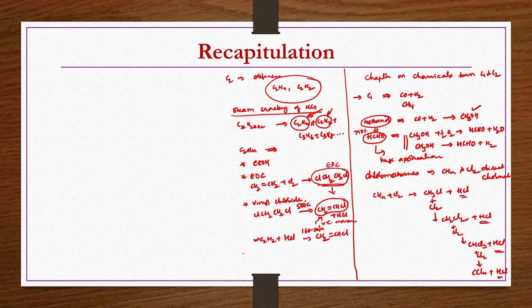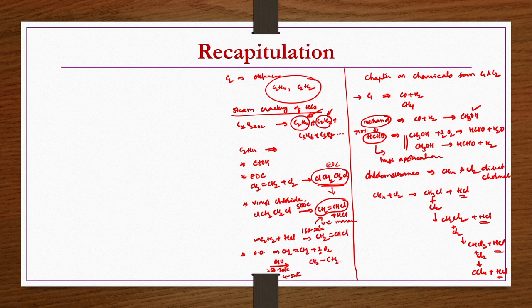After that we discussed ethylene oxide production, obtained by oxidation of ethylene in the presence of a silver oxide catalyst at about 250 to 300°C and 4 to 5 atmospheres of pressure. CO2 and water vapor are also produced as impurities. Up to this point we covered chemicals from C1 and C2 compounds. Now we will produce more chemicals from C2 compounds.